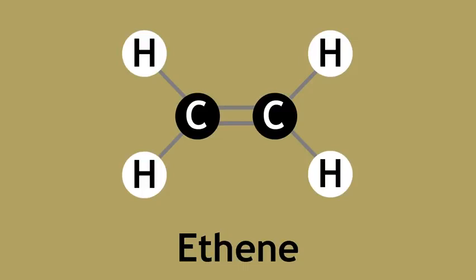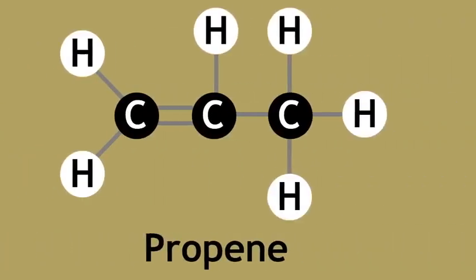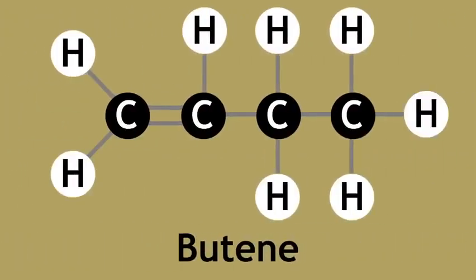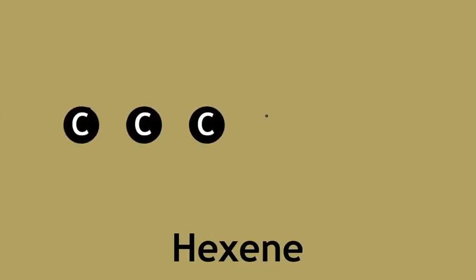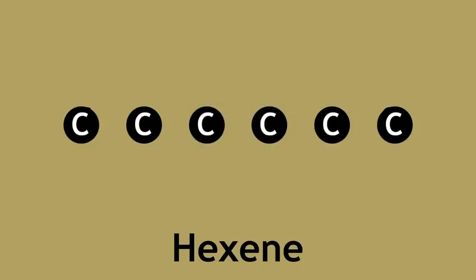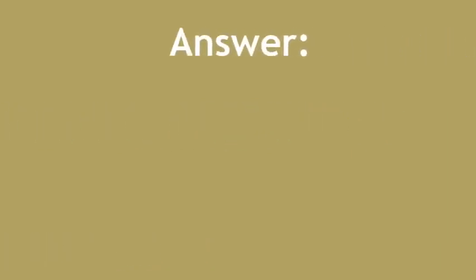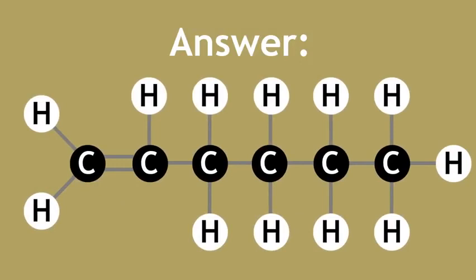These also follow a pattern and the next molecule in the series is propene and then butene. Pause this video now and try to draw the structure of hexene. As before, hexene has six carbon atoms. Here is the structure of hexene. This time there is a double bond because it's an alkene.